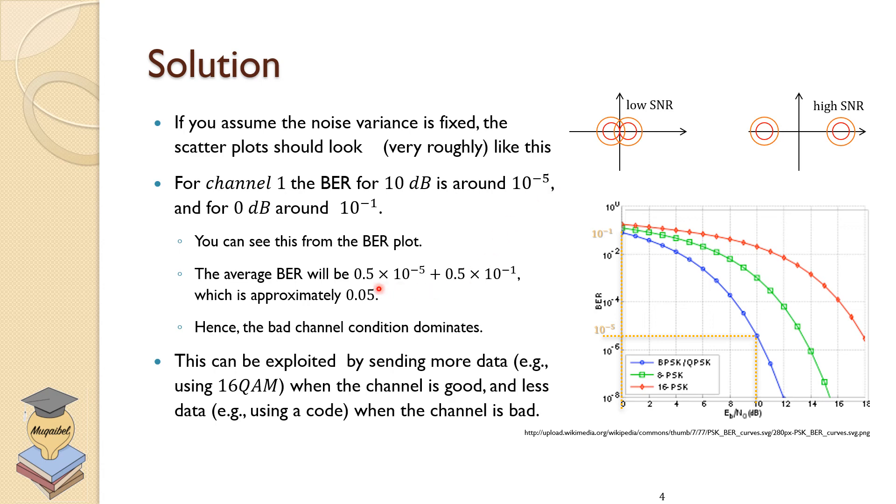So you can see that from the plot. If you scale 0.5 of the time, we have this probability of error, 0.5 times this probability, we find out approximately, we have 0.05 error, which means that this is dominating the error. So when we are in this scenario, we have almost no error. And when we are in this scenario, we have 0.05 probability of error. So the bad channel dominates the good channel.